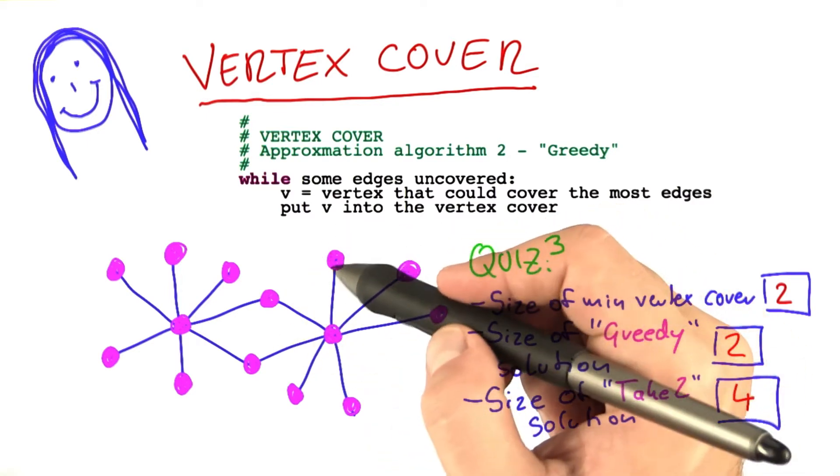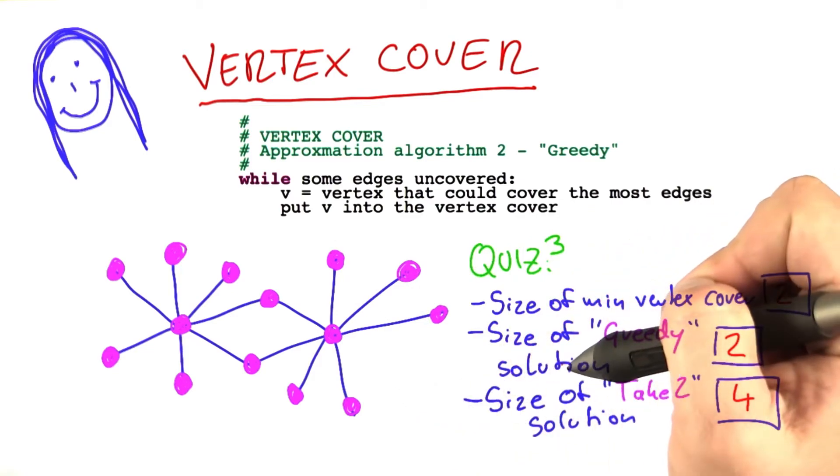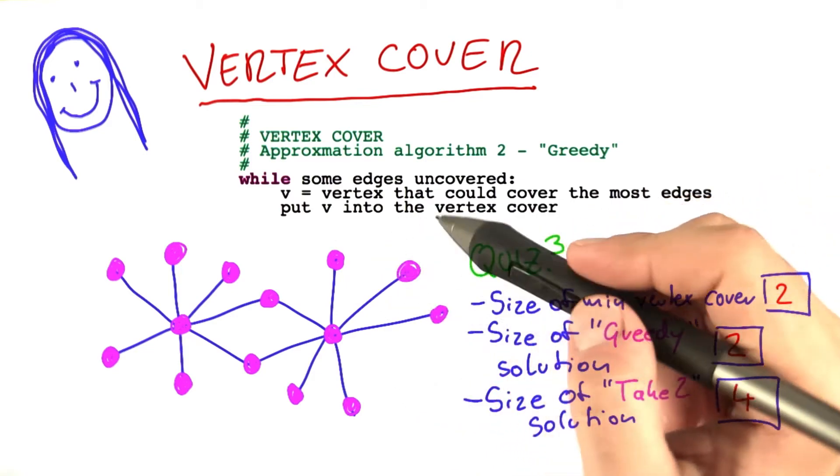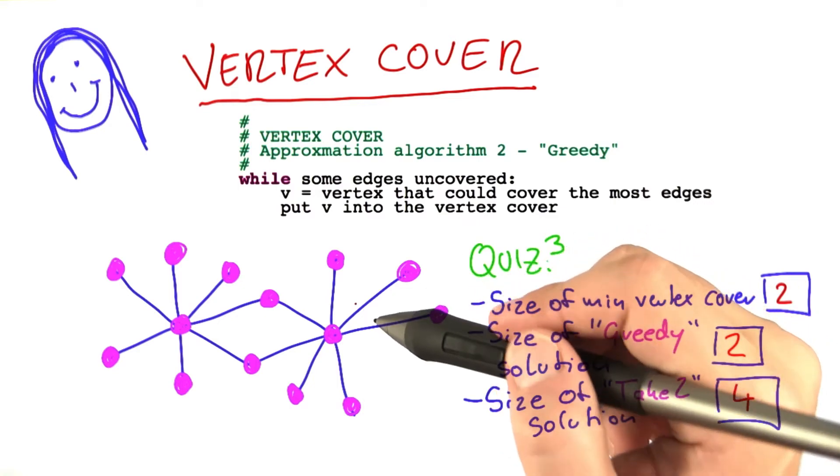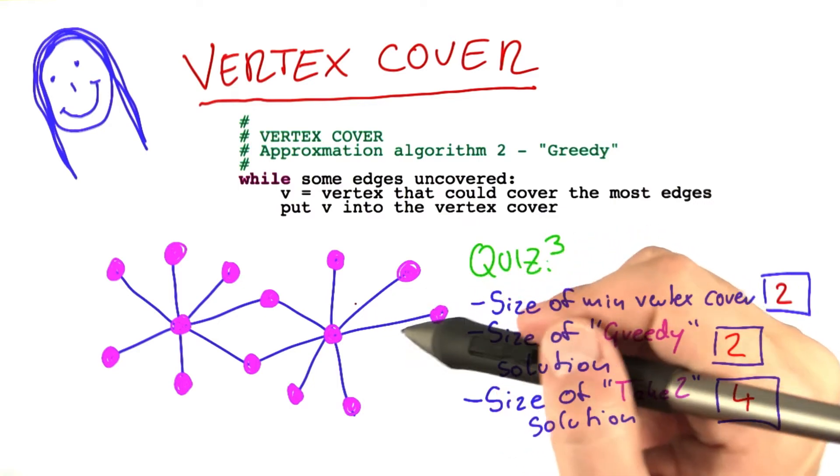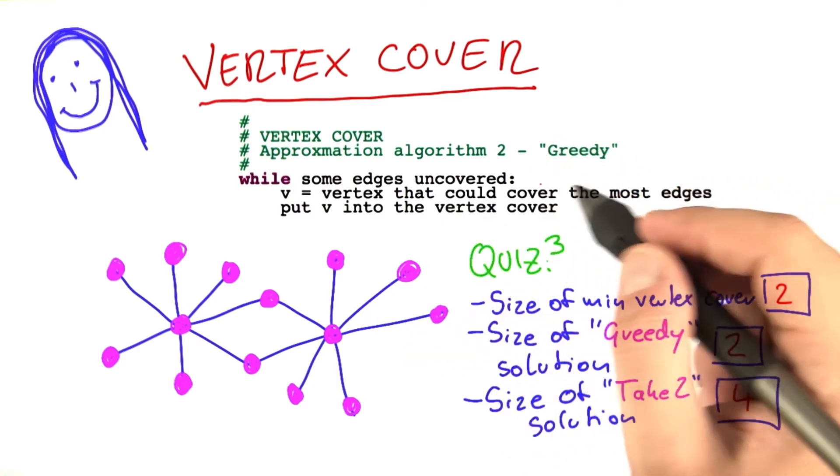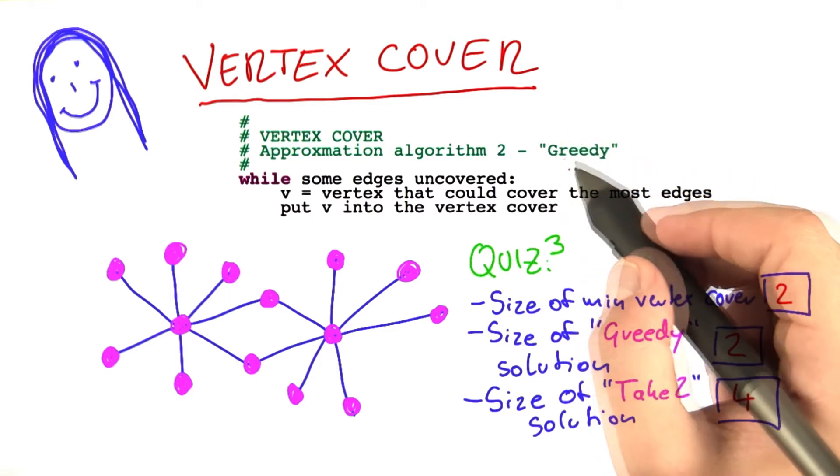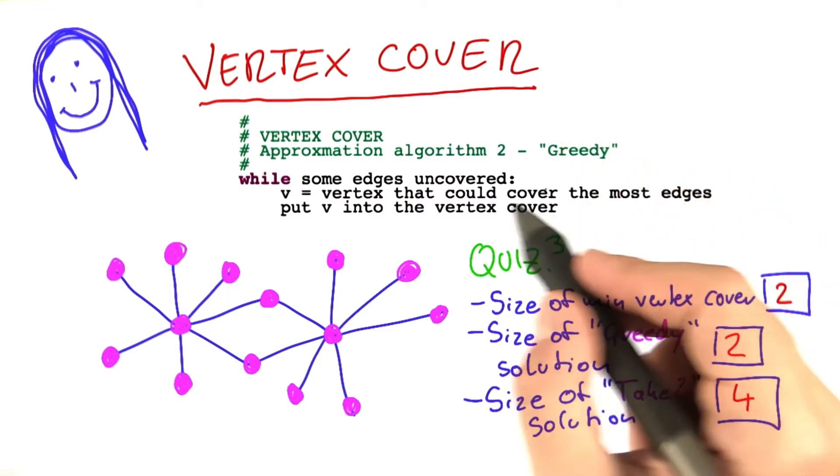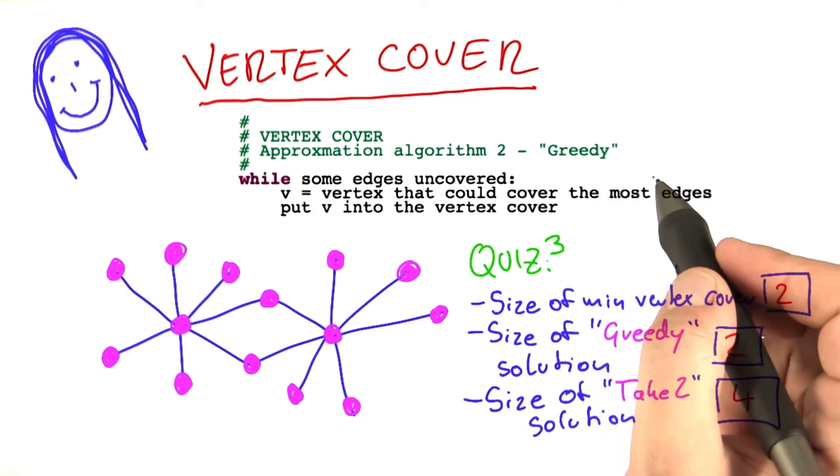And a good way to test approximation quality is to always try and construct an input for which the algorithm will perform really bad. So basically we're now going to try and trick this greedy algorithm into picking suboptimal vertices, using this greedy strategy against it.